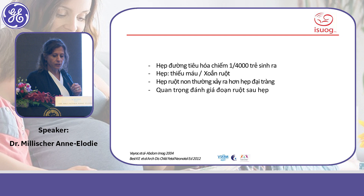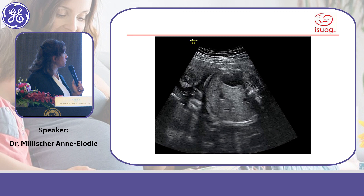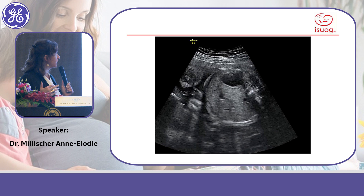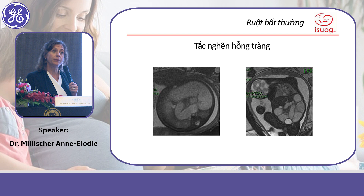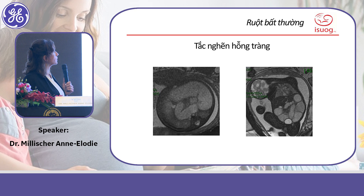Here you have this imaging example. The principal information the surgeon requires when you diagnose a bowel atresia is to know what digestive tract will remain functional within the abdomen. This is why MRI can be very useful for providing that information.